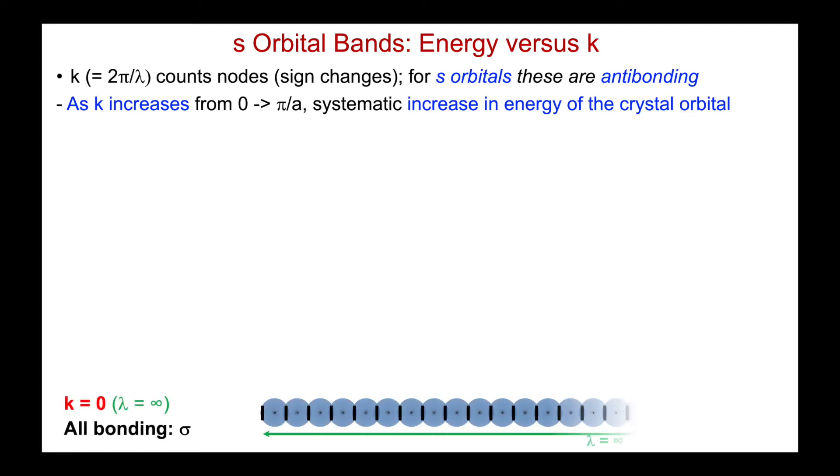So now let's just take a look at a suite of k values and focus more on how we can plot the energy versus the k vector. So here's, hopefully by now, our familiar k equals 0 configuration for the set of atomic orbitals, an infinite wavelength, everything in phase. That's the lowest energy.